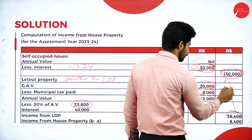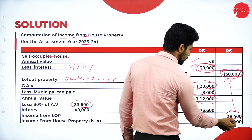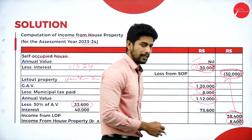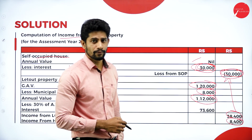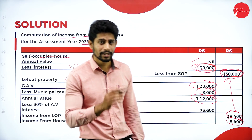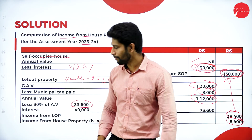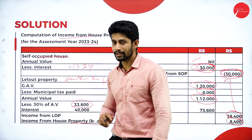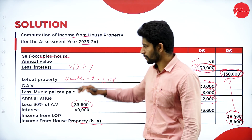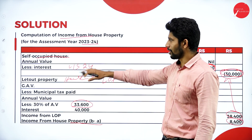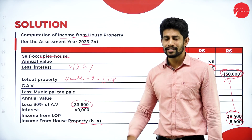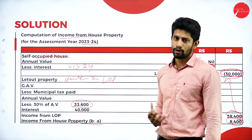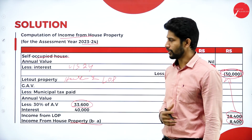Set off the loss of 30,000 from house one against the income of 38,400 from house two. The balance is 8,400. This 8,400 is the income from house property. This is how you solve a problem when they give you a self-occupied and a let out property together.